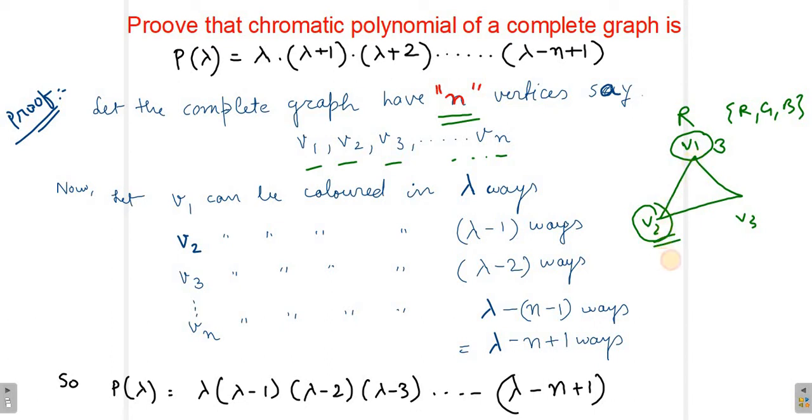We have only two choices. If we have n vertices and one color from lambda we have already given to v1, then v2 can be colored in lambda minus 1 ways. Similarly, v3 can be colored in lambda minus 2 ways.